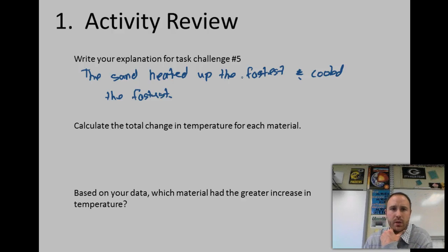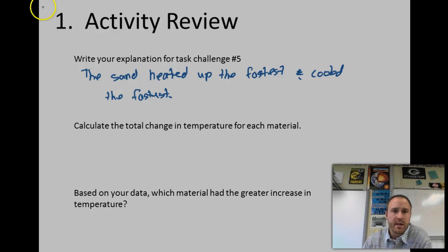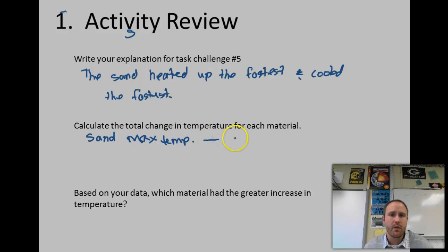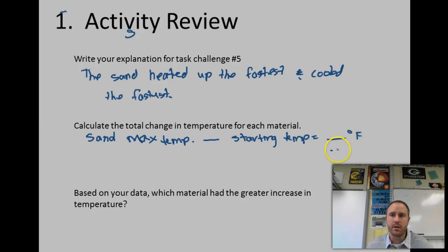Question number two of the lab was asking us to calculate the total change in temperature for each material. For sand, you had to take the highest temperature it reached — the maximum temperature — and subtract it from the original starting temperature. Whether you did it in Fahrenheit or Celsius, that would give you the total change: what it was at its maximum temperature versus its starting point.